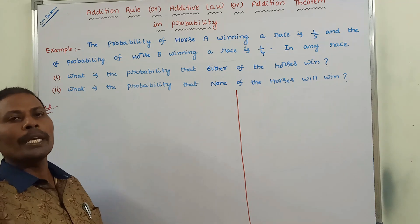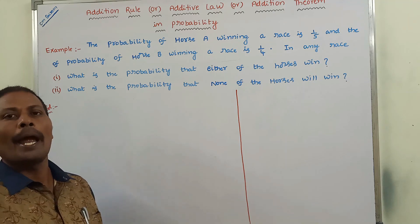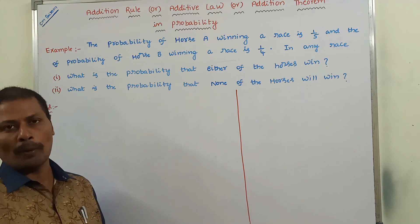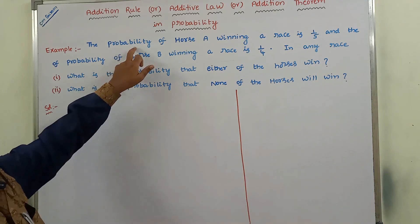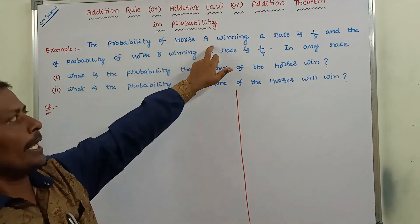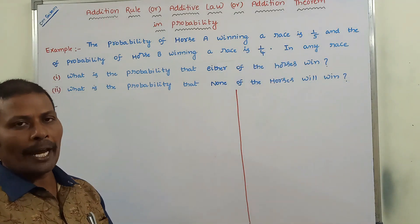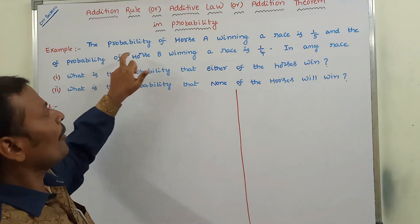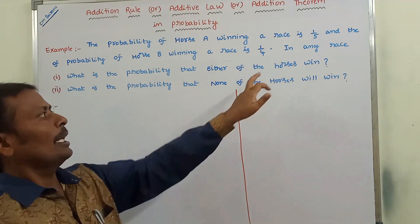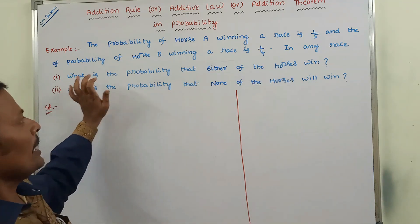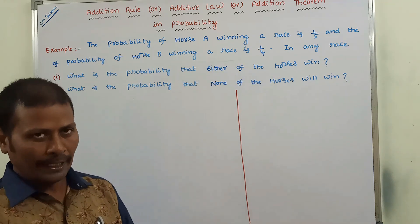Now we have to solve one more example problem on the addition theorem in probability. The given problem is: the probability of horse A winning a race is 1/5, and the probability of horse B winning a race is 1/4. In any race, what is the probability that either of the horses wins?